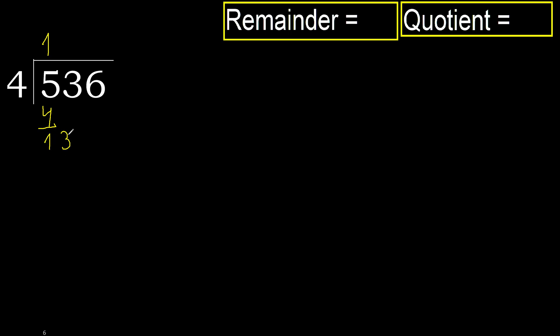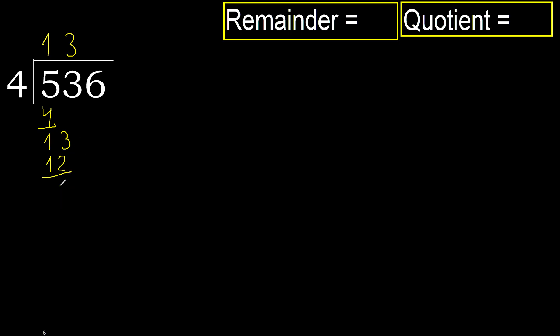13. 4 multiplied by 4 is 16 — 16 is greater. Multiply by 3 is 12. Subtract. Next.